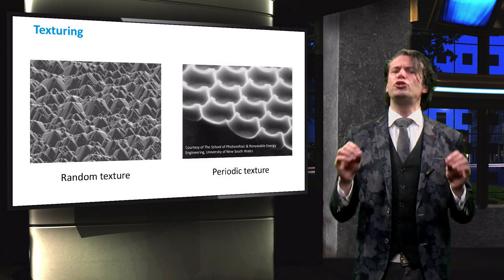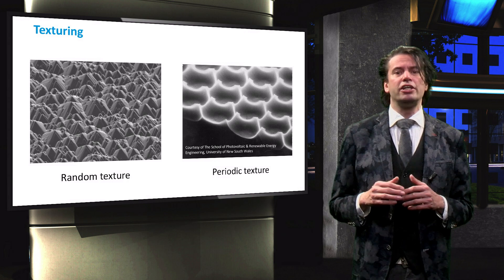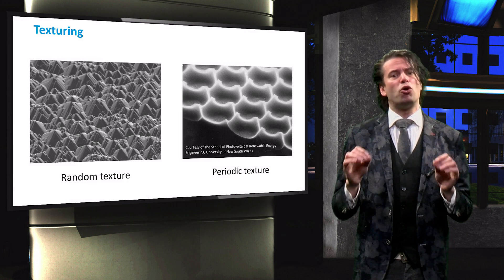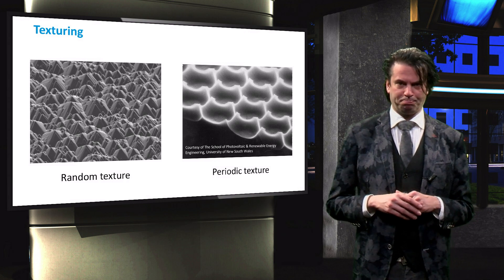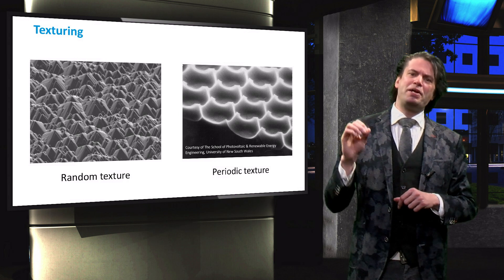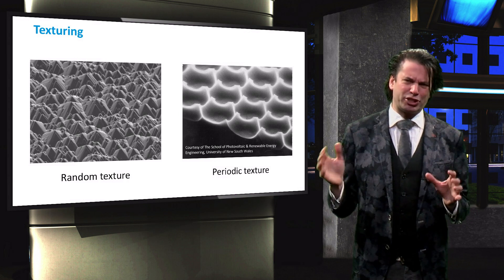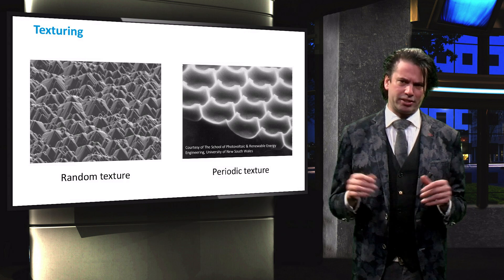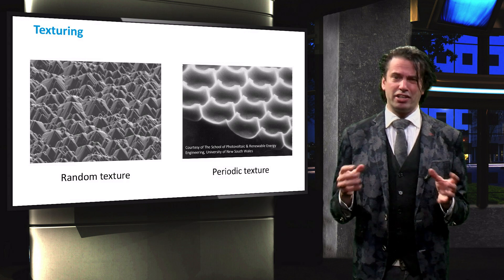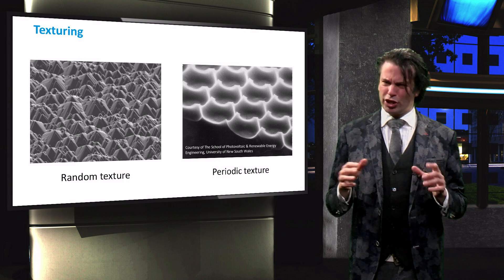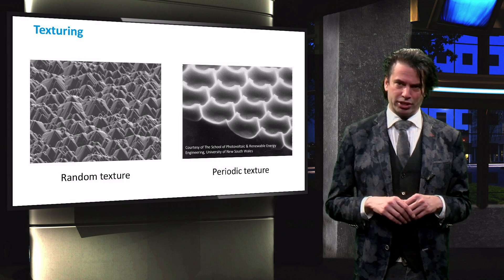Photolithography is used to create geometries specifically designed to optimize scattering in parts of the spectrum. By repeating such a geometry, a periodic texture is created. As laser scribing is relatively expensive, textures are usually created during a wet etching process.